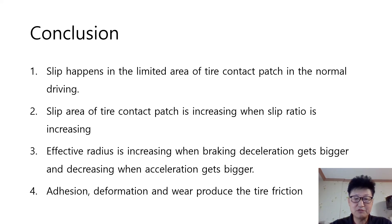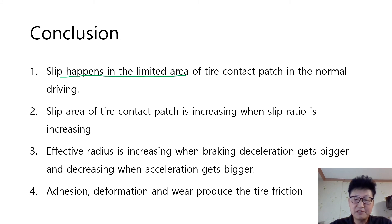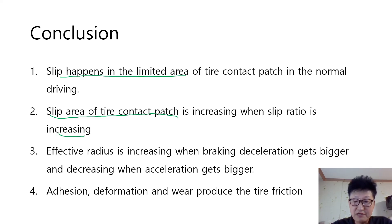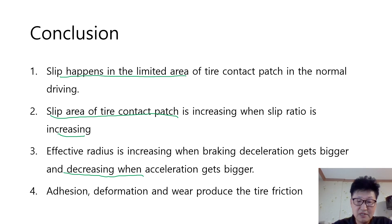Here is the conclusion. Slip happens in the limited area of the tire contact patch in normal driving. The slip area of the tire contact patch increases when the slip ratio increases. Effective radius increases when braking deceleration gets bigger, and decreases when acceleration gets bigger. Adhesion, deformation, and wear produce tire friction.